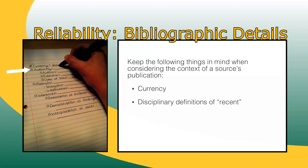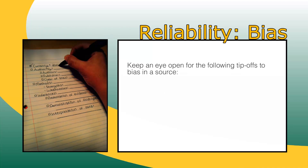Also consider the authority of the source's creators. Who published this source? Is the author an expert on this topic who has published other works on similar topics? Keep your eyes open for bias here, too. What are some possible motivating factors for publishing the piece, and what kinds of biases would that encourage?